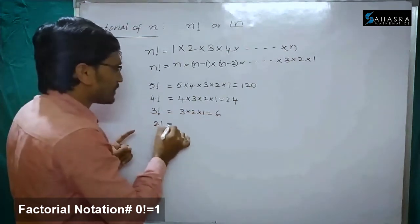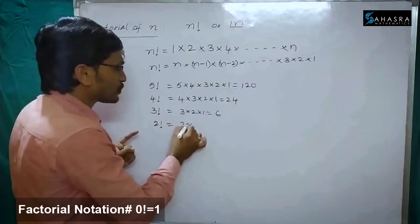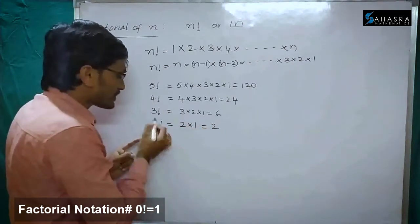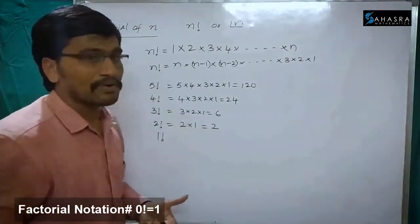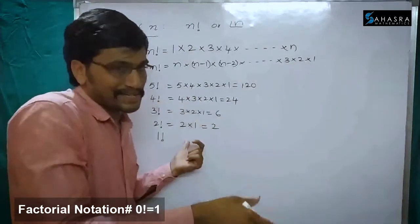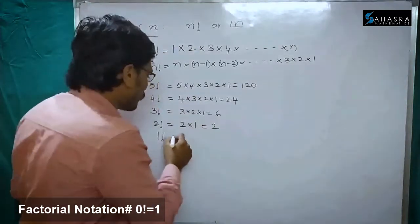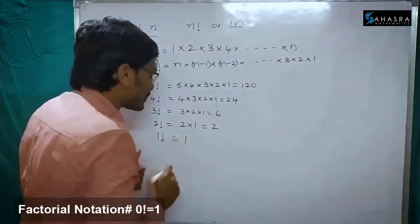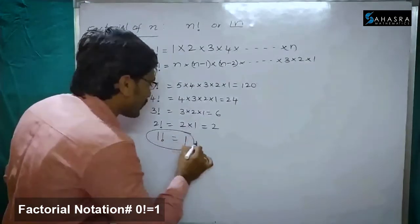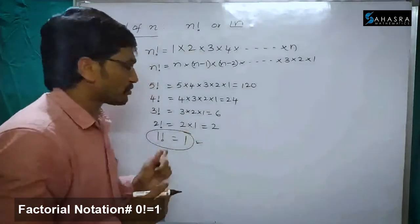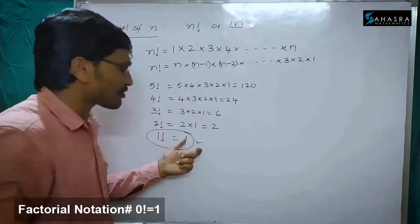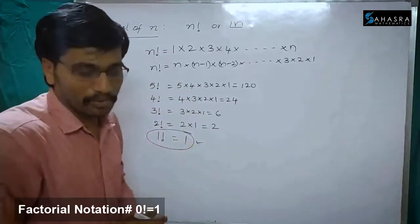2 factorial is nothing but 2 into 1, which is equal to 2. 1 factorial is nothing but 1 itself. So 1 factorial is equal to 1.